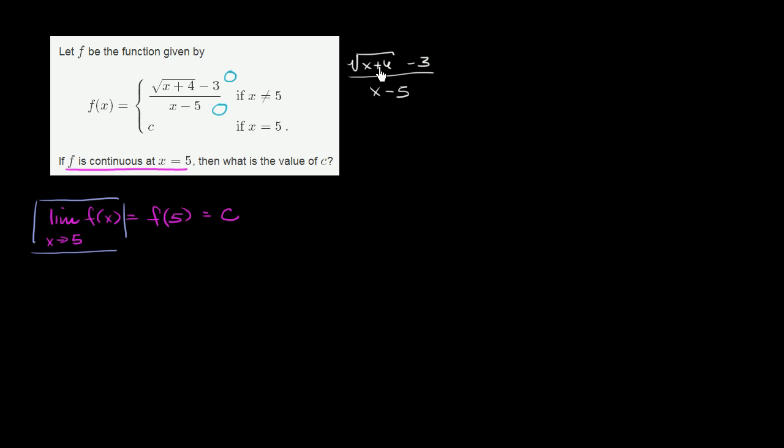We have the square root of x plus 4 minus 3 over x minus 5. Any time you see a radical plus or minus something else to get rid of the radical, what you can do is multiply by the radical doing the opposite. If you have a radical minus 3, you multiply by the radical plus 3. So in this situation, you multiply the numerator by square root of x plus 4 plus 3 over the square root of x plus 4 plus 3.